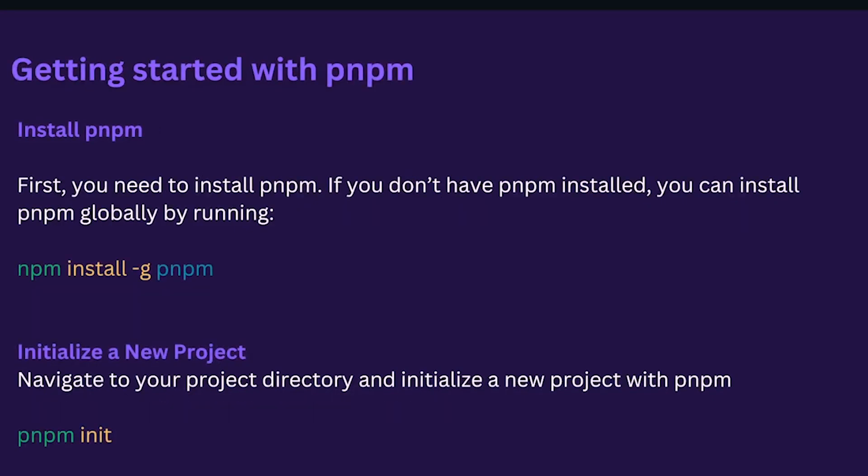Getting started with PNPM. First, you need to install PNPM. If you don't have PNPM installed, you can install it globally by running npm install -g pnpm. Then, navigate to your project directory and initialize a new project with PNPM by running the pnpm init command.